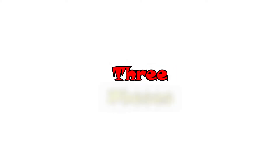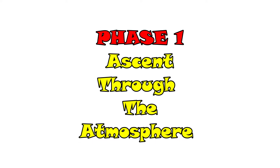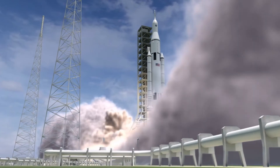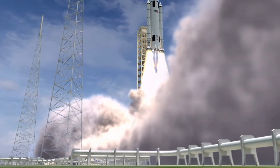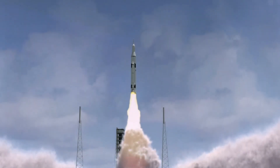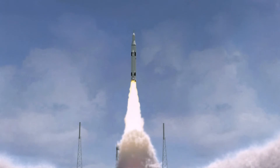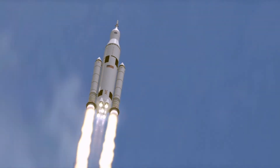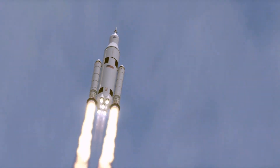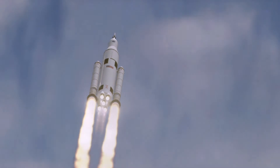Any space mission comprises three primary sequential phases. Phase 1: Ascend Through the Atmosphere. Most space vehicles initiate their mission by blasting off from the Earth's surface, climbing out of the sensible atmosphere and accelerating to orbital or escape velocity.